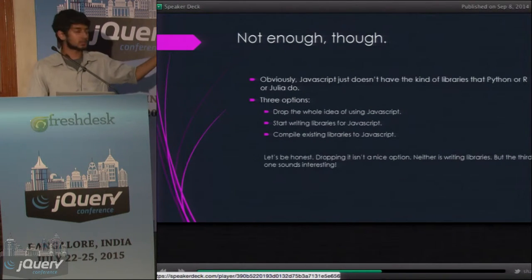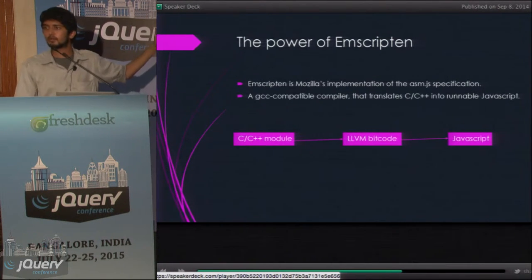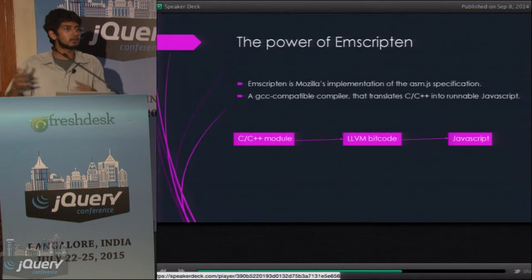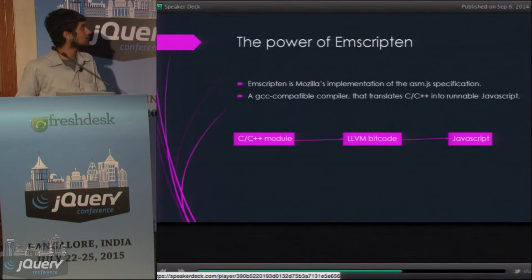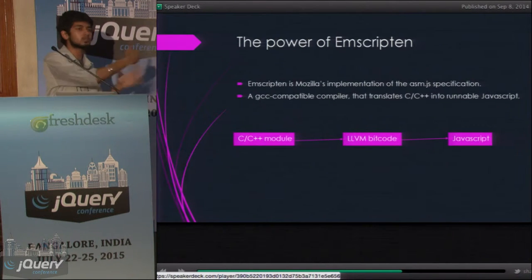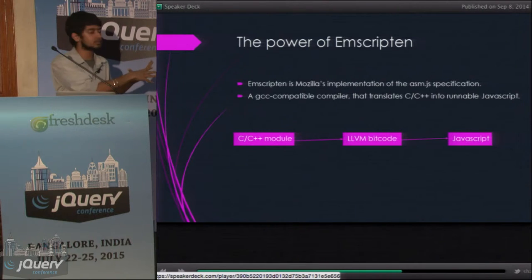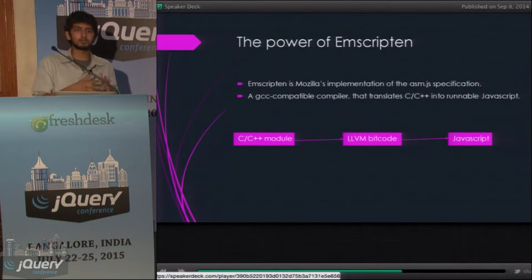Compiling existing libraries kind of makes sense, and that's where Emscripten comes in. Emscripten is essentially Mozilla's implementation of the asm.js specification. It's a GCC-compatible compiler, and it literally translates C++ into runnable JavaScript through the power of LLVM — the Low Level Virtual Machine. Your C++ module is compiled into LLVM bitcode, which is highly optimized, and that is then translated into runnable JavaScript. It's not readable — it's runnable. That's a major difference.